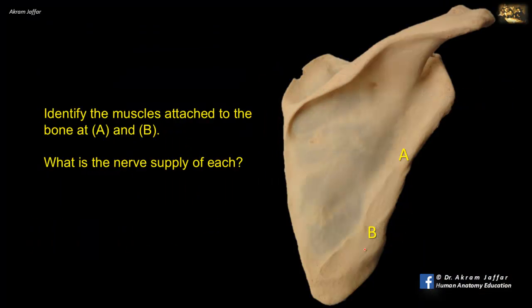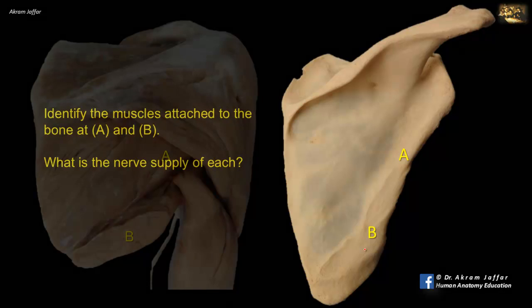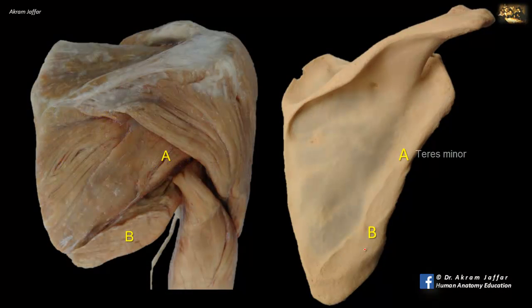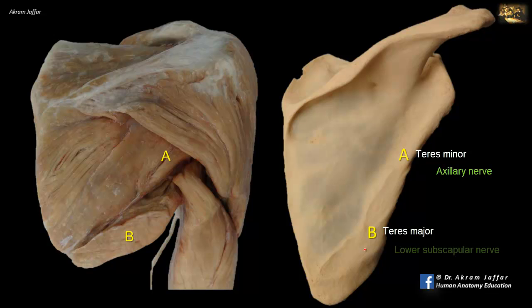Identify the muscles attached to the bone at A and B, and what is the nerve supply of each. Muscle A is teres minor, supplied by the axillary nerve together with deltoid. Muscle B is the bulkier teres major, which is supplied by the lower subscapular nerve, which also supplies subscapularis muscle.